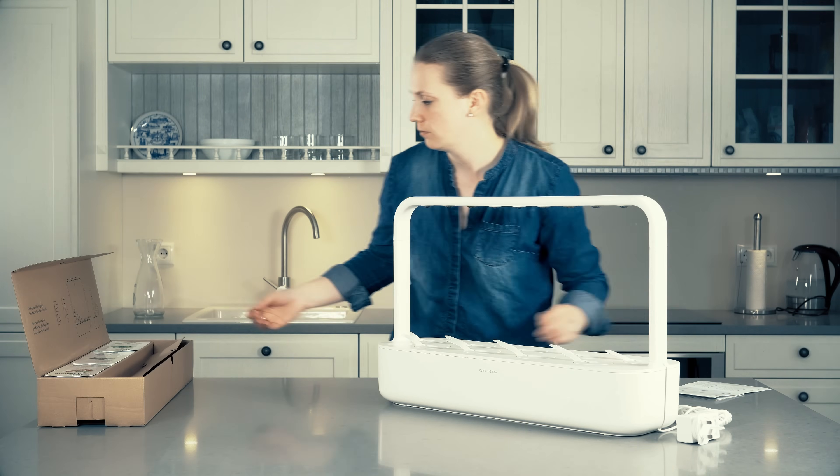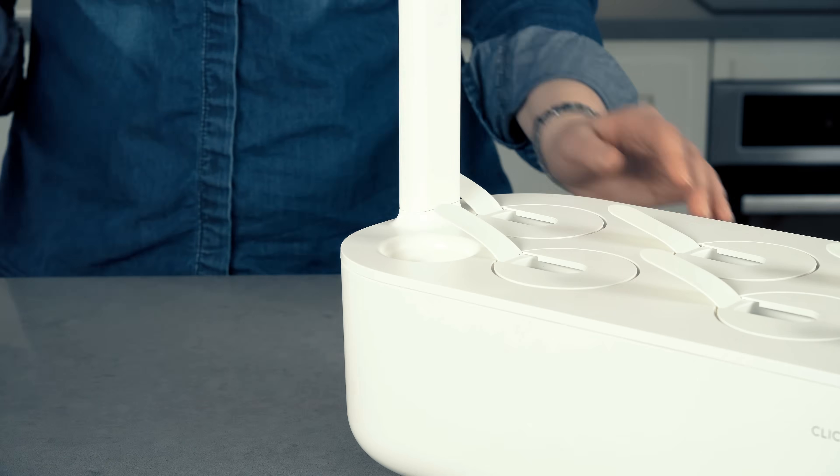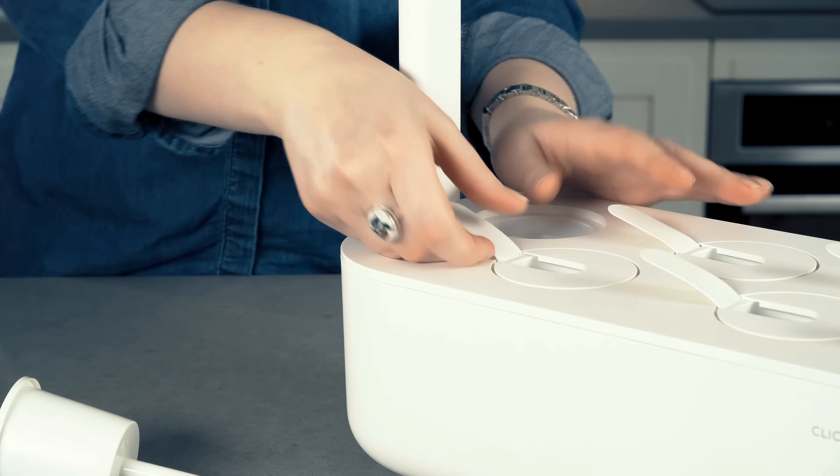Now it's time to insert your smart soil plant pods into the garden. Remove the U-shaped lids from the plant cups and put them on the side for the time being.